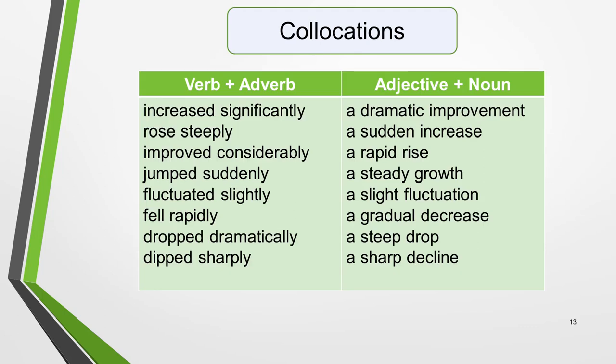Many words in these lists can be formed into collocations ideal for expressing change. There are two ways to create collocations: a verb and an adverb, or an adjective and a noun. Examples for verb and adverb: rose steeply, improved considerably, jumped suddenly, fluctuated slightly, fell rapidly, dropped dramatically, dipped sharply. For adjective and noun combinations: a dramatic improvement, a sudden increase, a rapid rise, a steady growth, a slight fluctuation, a gradual decrease, a steep drop, and a sharp decline.